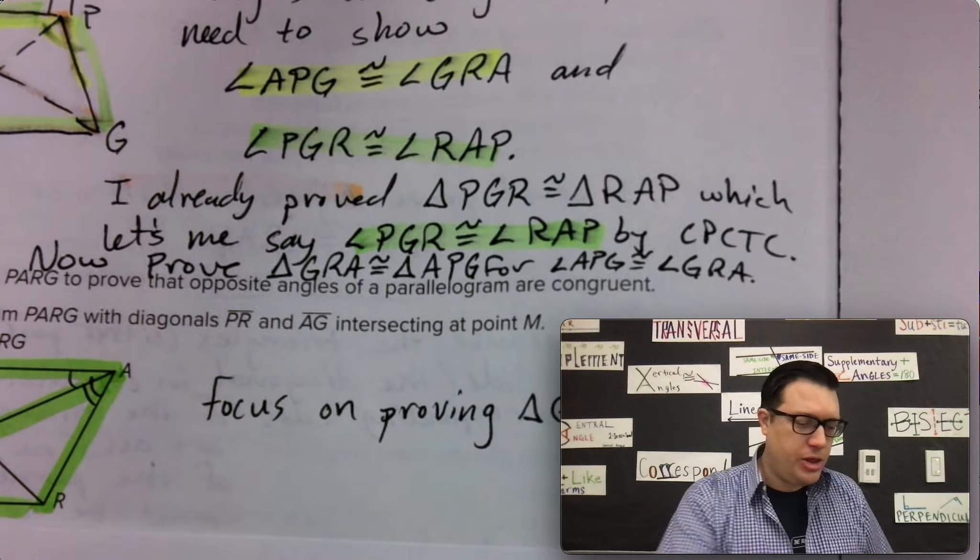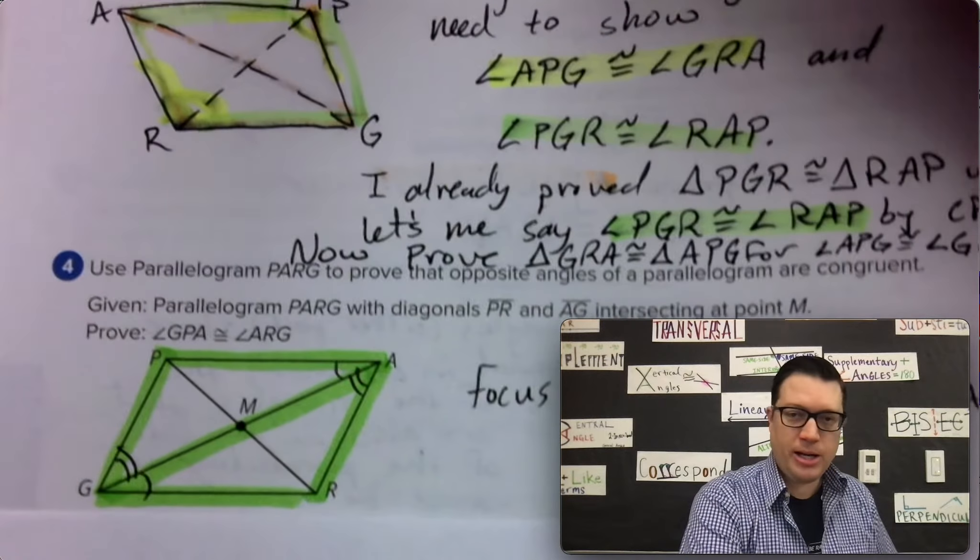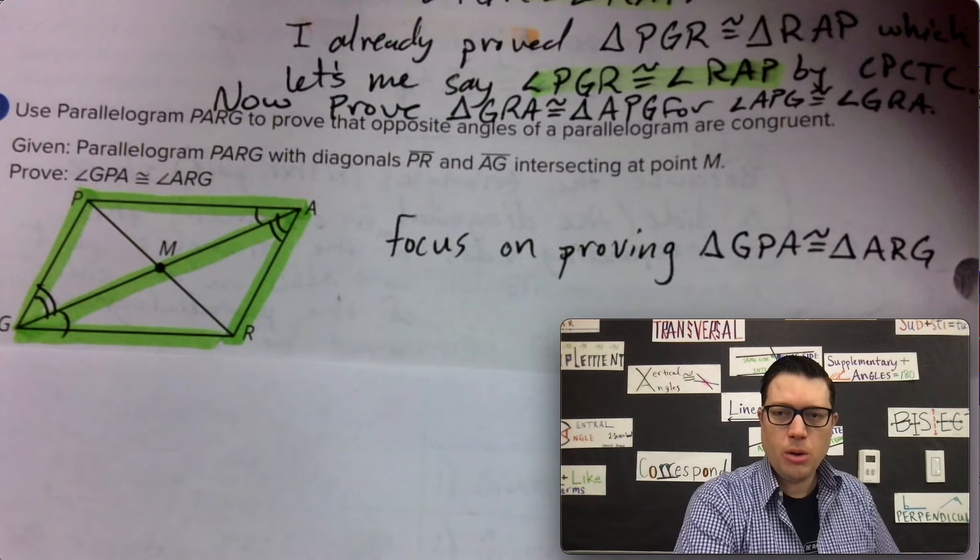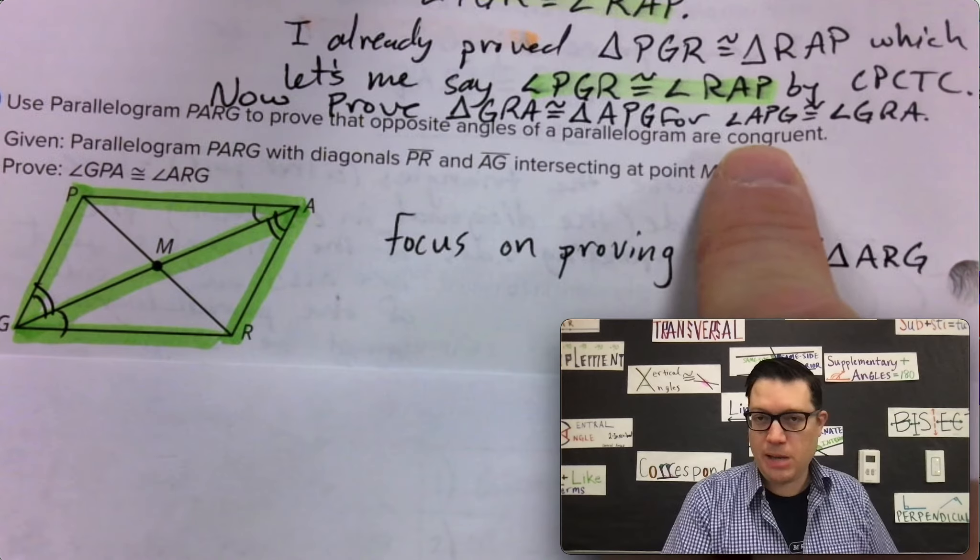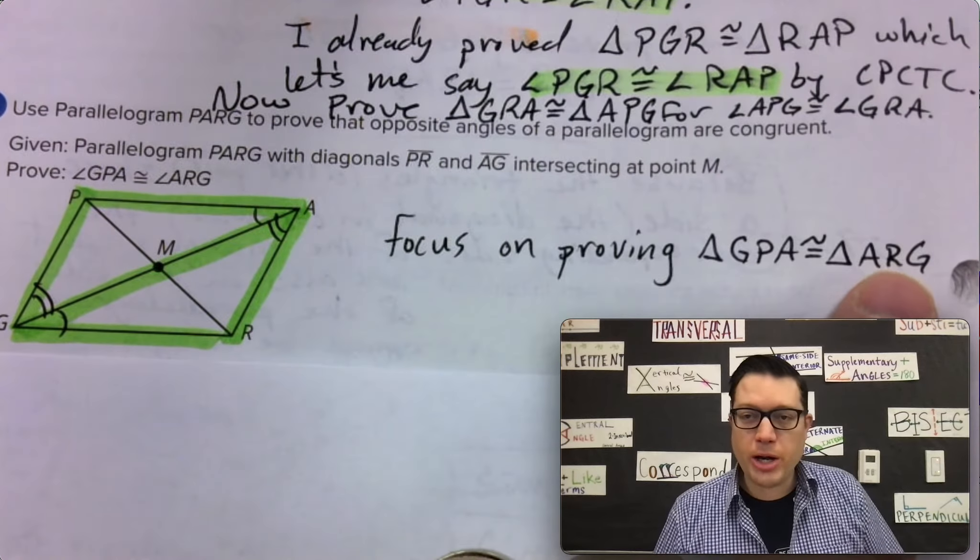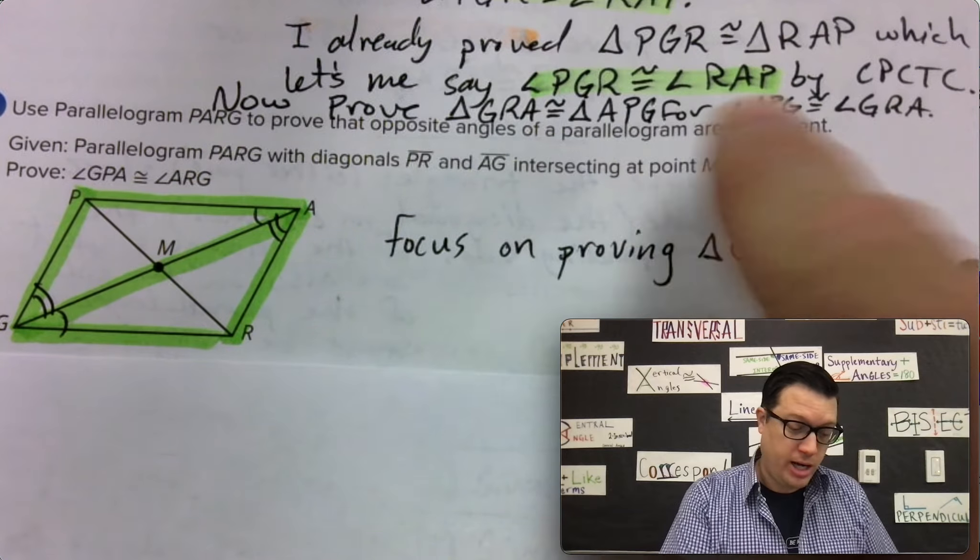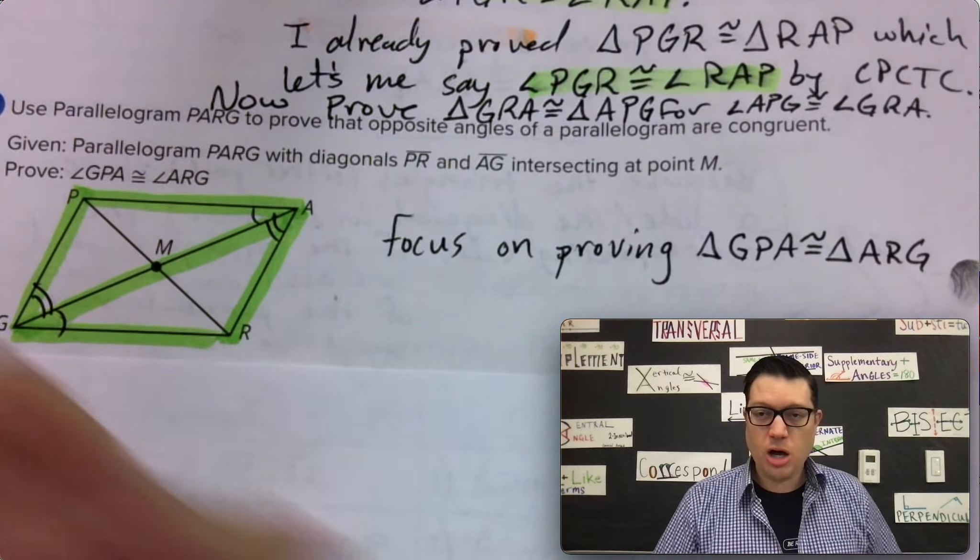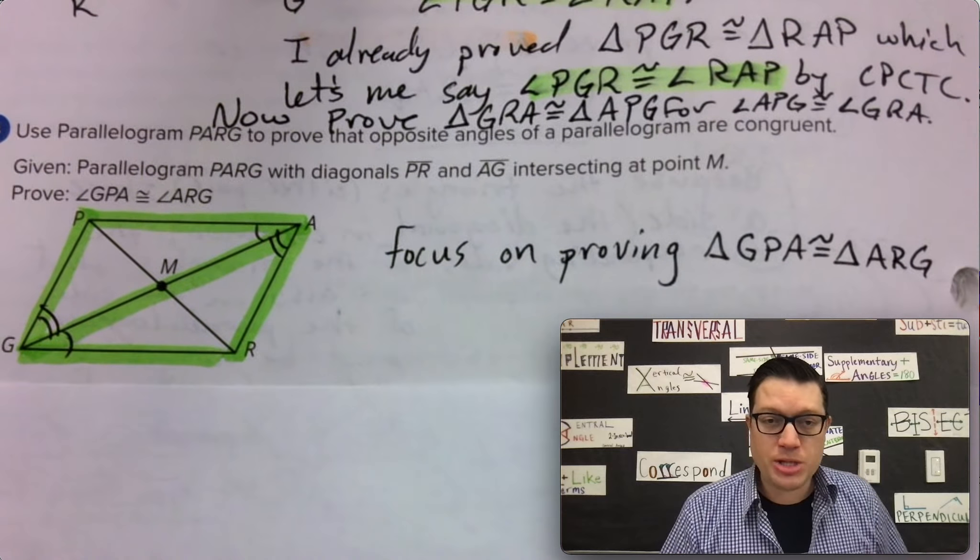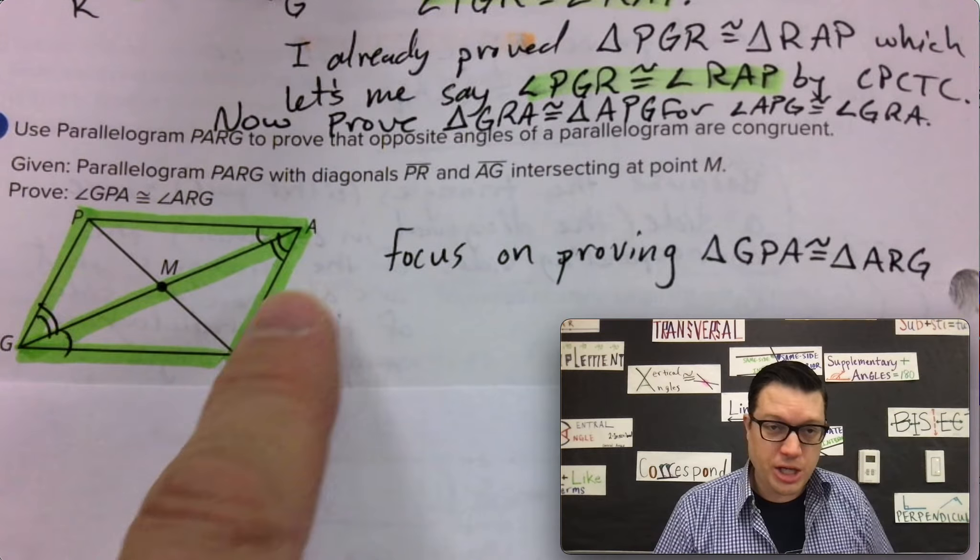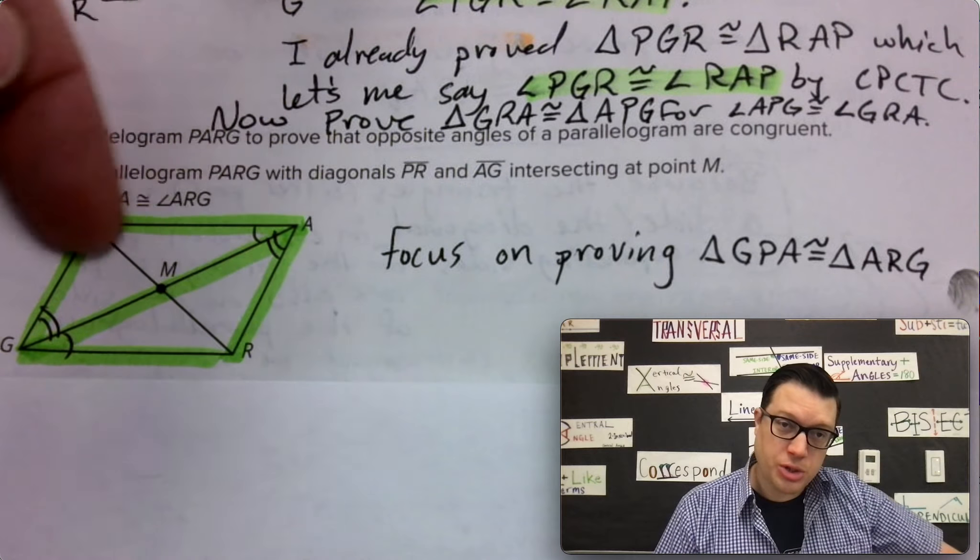But with a little twist, we're going to focus on the other letters and focus on the other side. Let's take a look. We're going to focus on proving that triangle GPA, which I guess I wrote as APG, is congruent to triangle ARG, which I wrote as GRA, right? So ARG versus GRA. It's just a matter of which letters you're going to prioritize. So here it is, this triangle ARG and this triangle GPA.